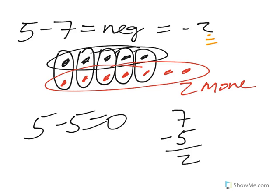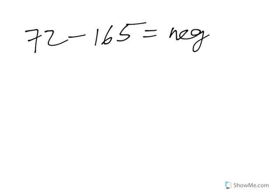So let me do that with a more complicated example. Let's say we have 72 minus 165. Again, my intuition is that it's negative, but I have to figure out how much bigger 165 is than 72 to see how big this negative number is.